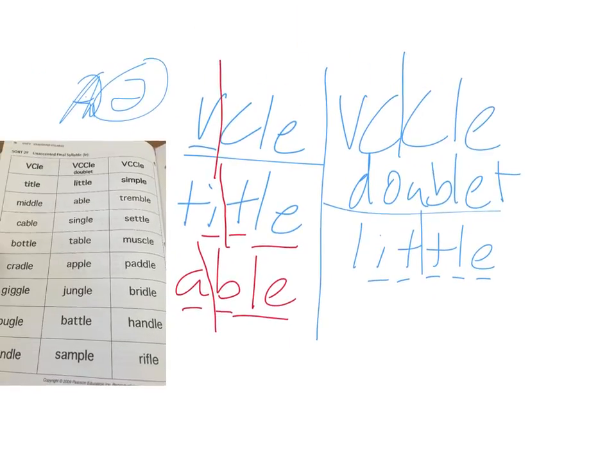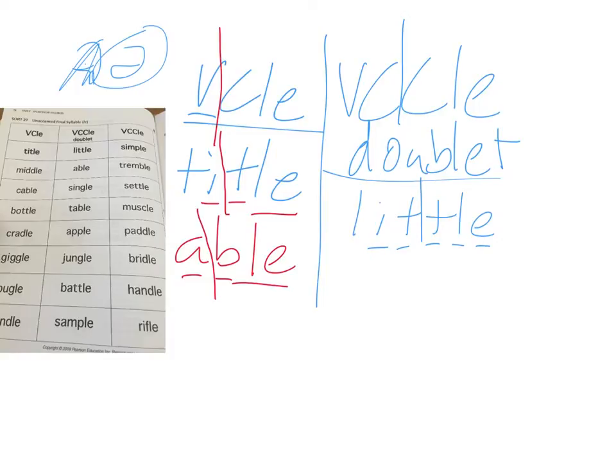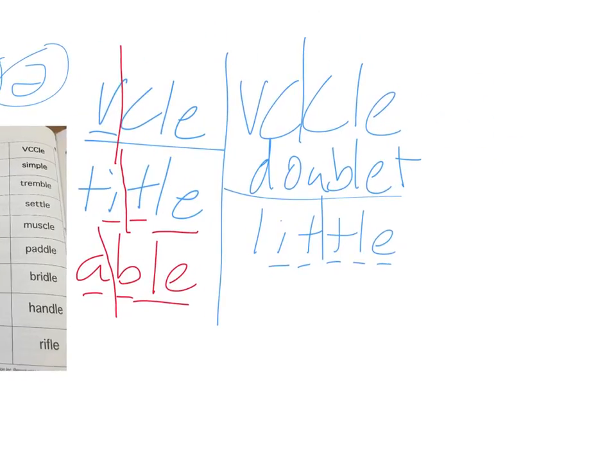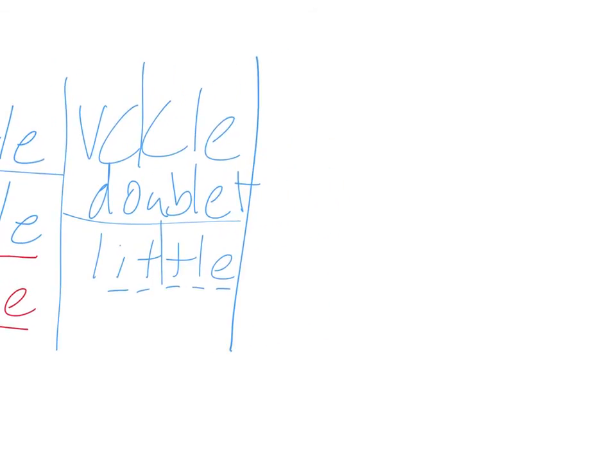In all the V-C-L-E words, you'll have long vowel sounds because you have the open syllable. The juncture's between the vowel and the consonant. When your juncture's between the two consonants, you have short vowel sounds, including the third column, which is V-C-C-L-E. But this one's not the doublet.